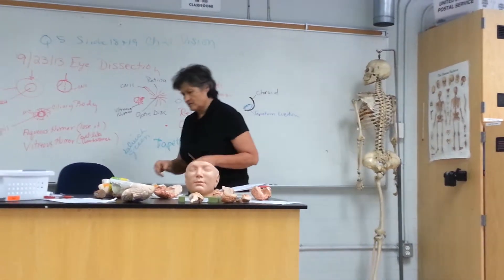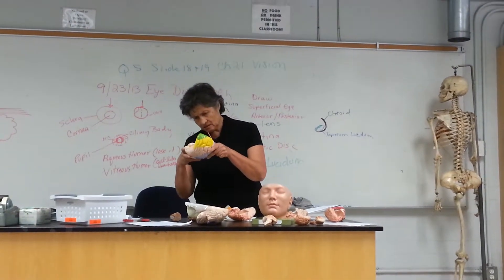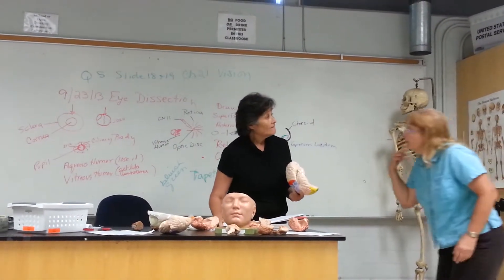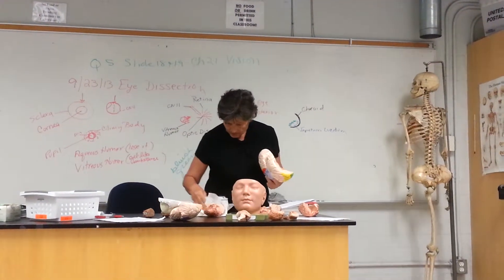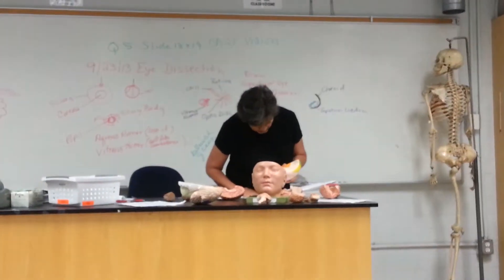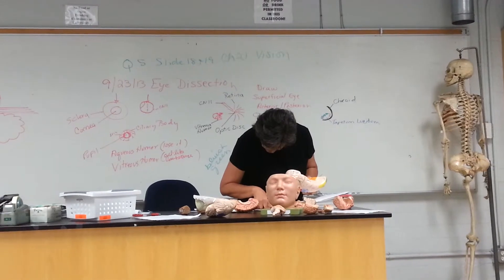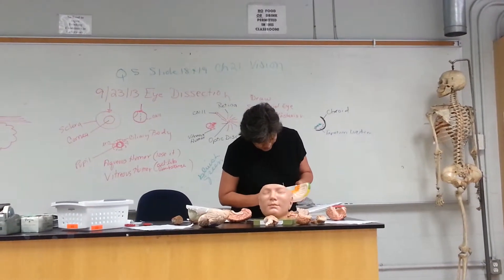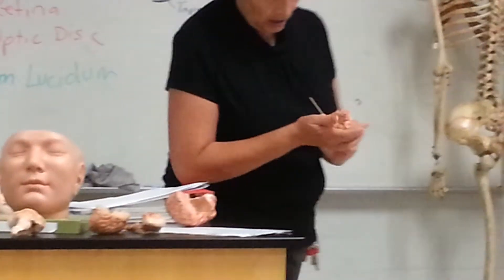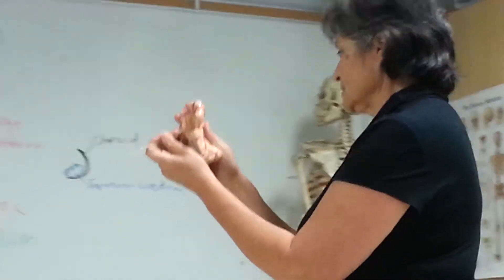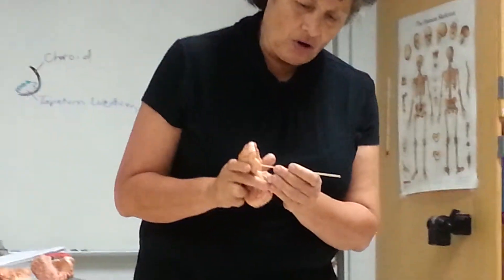I don't think I ever really found a good model for the hippocampus. The hippocampus — where is the hippocampus? Anyone find it? It's inside. Here we go — there's the hippocampus right there. So if you had the temporal lobe, you could see the hippocampus coming through there. Here you can't see it because the choroid plexus is on top of it.